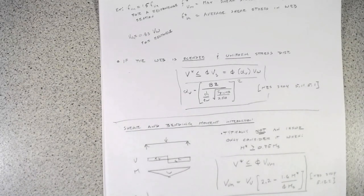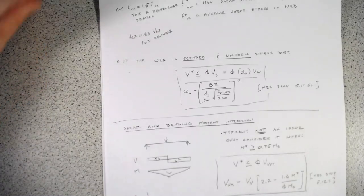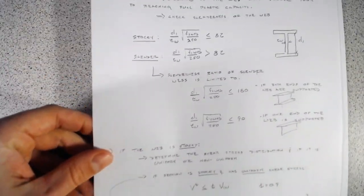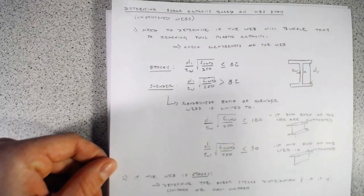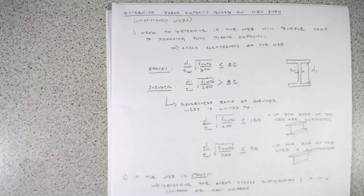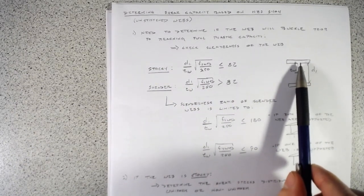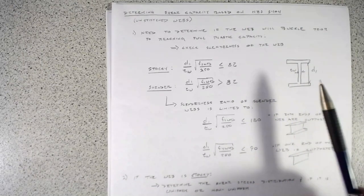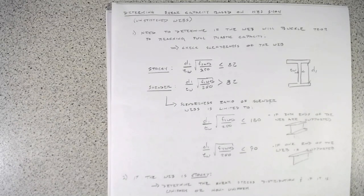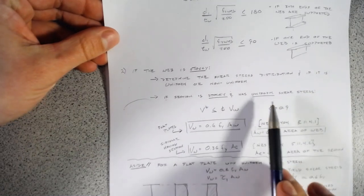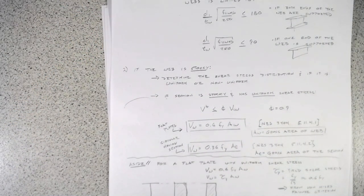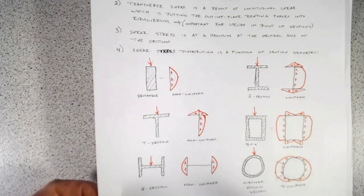That covers how NZS 3404 handles shear design for unstiffened webs. We determine whether the web is stocky or slender from its slenderness ratio, then whether the shear stress distribution is uniform or non-uniform from section geometry. There is more to explore with stiffened webs, but that's outside the scope of this video.